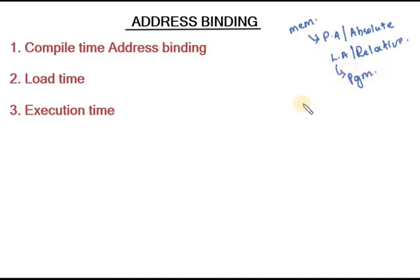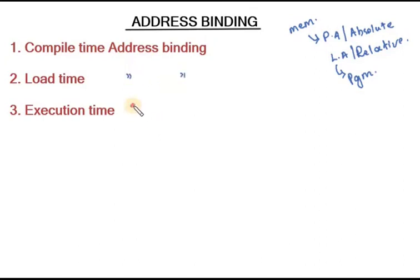We are dealing with different types of address binding. Address binding is of three kinds: compile time address binding, load time address binding, and execution time address binding.